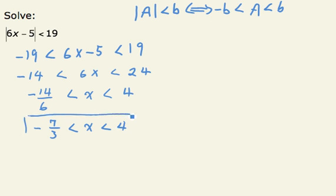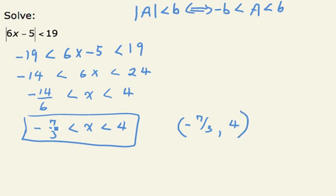So this is one way to write the answer. The other way to write it is to use interval notation. I could write round bracket negative 7 thirds comma 4. So this is writing the answer in inequality notation and this is interval notation.